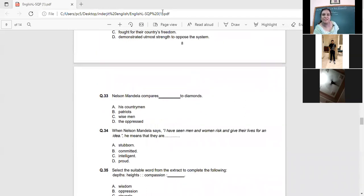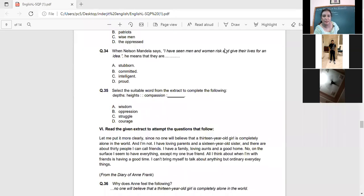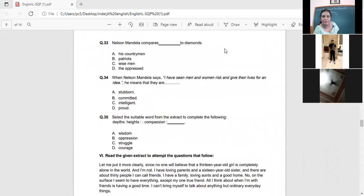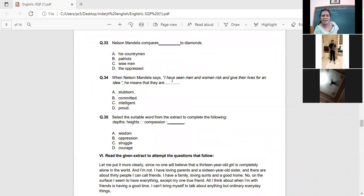When Nelson Mandela says, I have seen men and women risk and give their lives for an idea, he means that they are stubborn, they never give up, they're committed, they are intelligent and proud. So here, please once again be sure of the meaning. Committed, they are very consistent towards that cause. So it is committed.